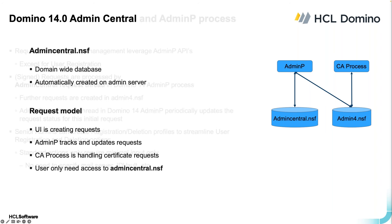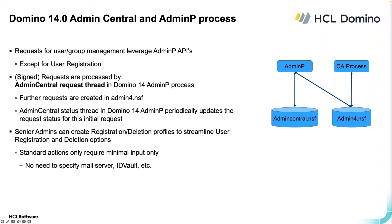The CA process is also involved and handles certificate requests. You only need request access to Admin Central, not to the whole download directory. There are several databases involved: Admin Central is the new one, and admin4 is what experienced admins are used to — admin4 drives requests through AdminP and the CA process. Admin Central leverages a lot of existing APIs for this work. User registration required tweaking one API to support renaming for short names and internet addresses. Similar to admin4, all requests in Admin Central are signed.